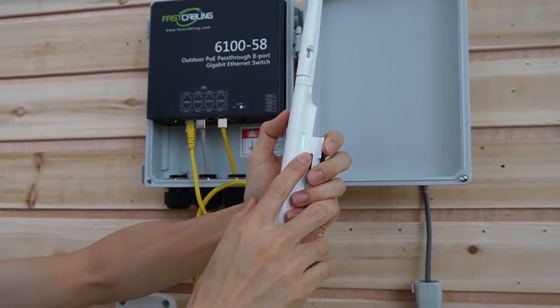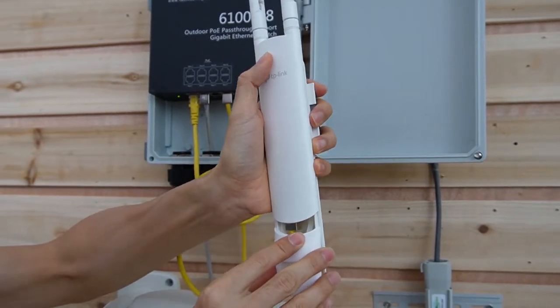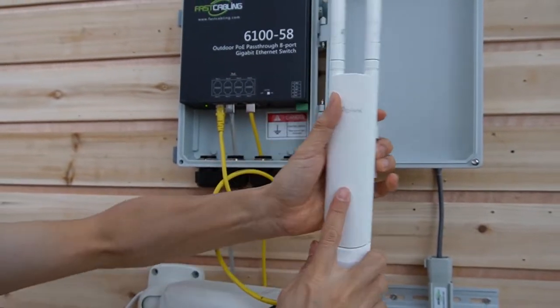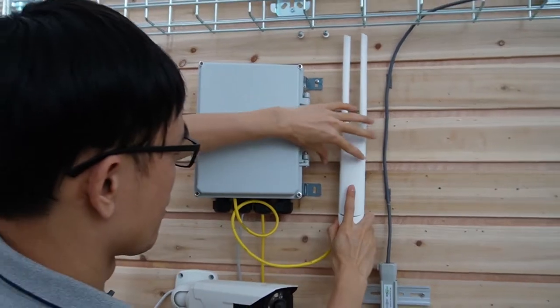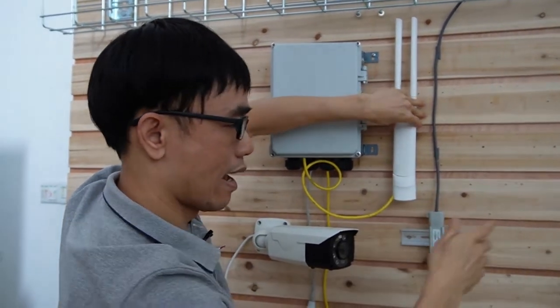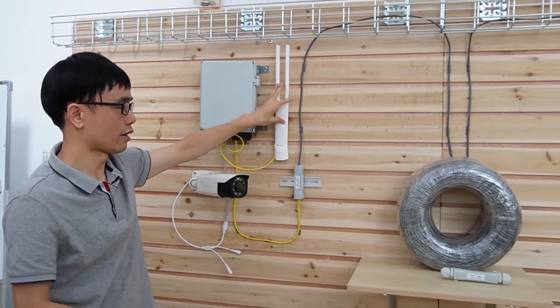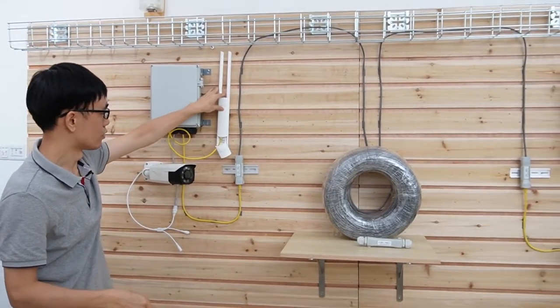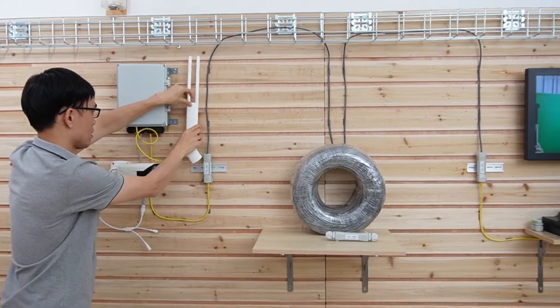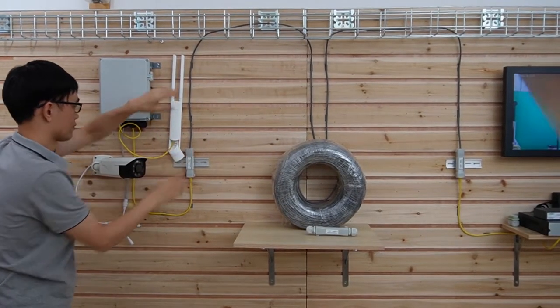You see the indicator is on, now the outdoor access point is starting to initialize. It will take the data from the switch and also the router, then provide the Wi-Fi coverage here. So it's quite easy. Let me put it in another place, that will be fine.